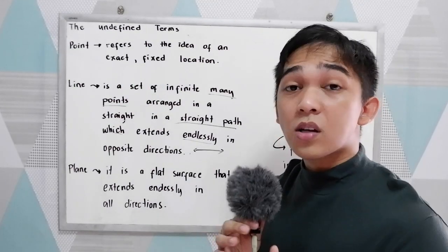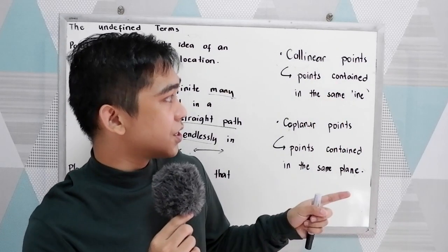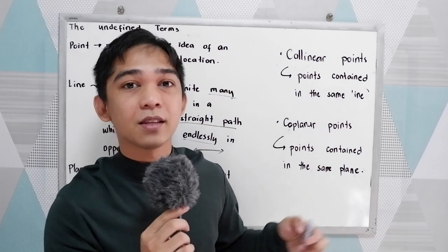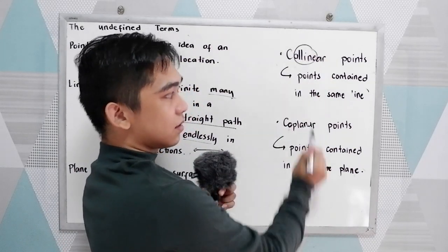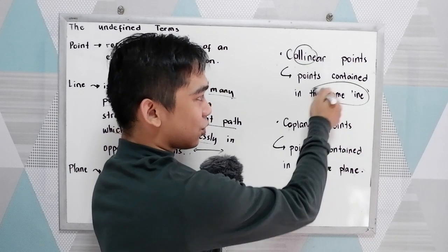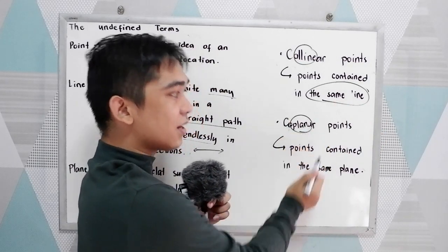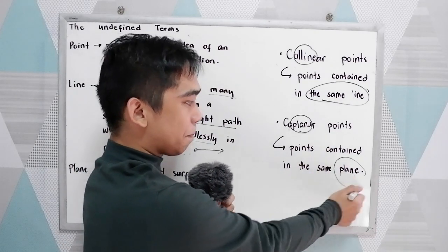Now, you will also encounter the collinear points. Collinear, these are the points contained in the same line. So we have collinear, the same line. Contained in the same line. We also have the coplanar points contained in the same line.